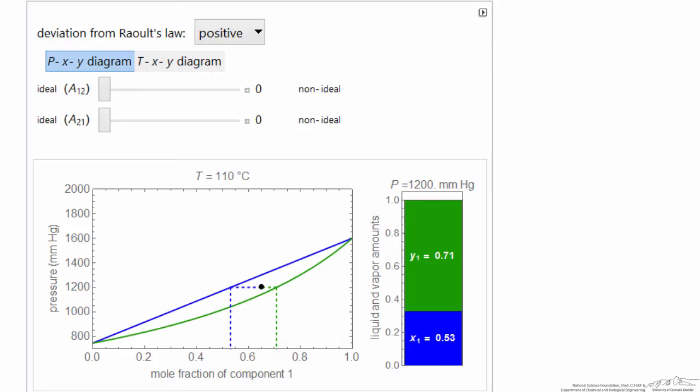Here we're looking at the simulation, non-ideal liquid phase, starting out at a condition where these parameters are zero, which is an ideal solution. So the bubble point line, the blue line, is a straight line.